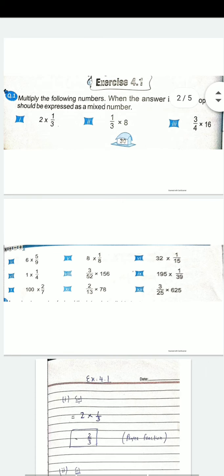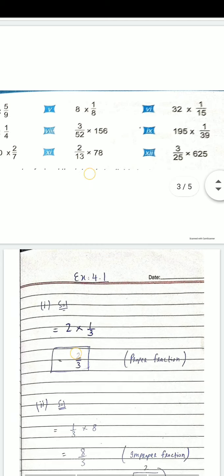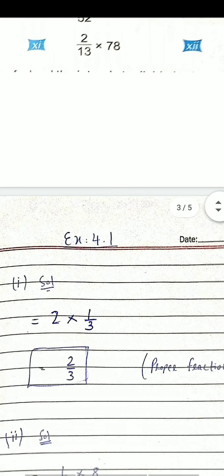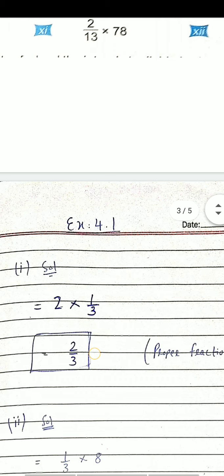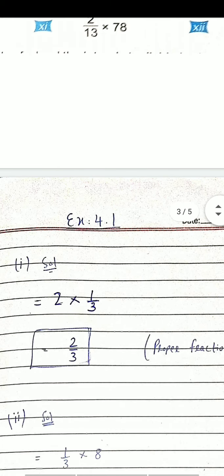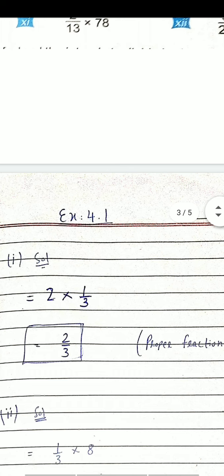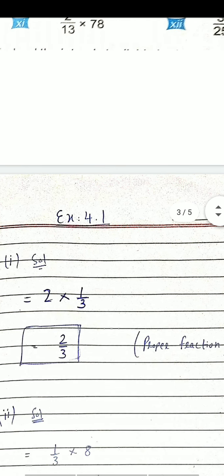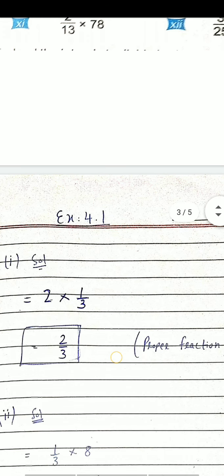Question نمبر 1: 2 multiply by 1/3۔ یہ simply 2×1 اوپر اور نیچے 3 — تو answer ہے 2/3۔ اب دیکھیں اس میں denominator بڑا ہے، numerator چھوٹا ہے۔ یہ proper fraction ہے، کیونکہ denominator بڑا ہے۔ جب یہ proper fraction ہے تو اس کے اندر ہمیں mixed number والی form کی ضرورت نہیں ہے — تو اس کا answer صرف 2/3 آیا۔